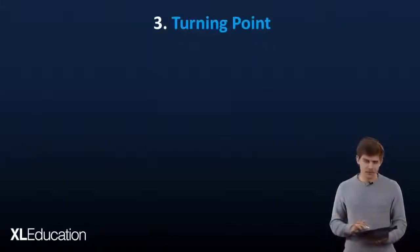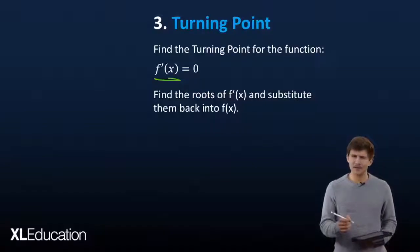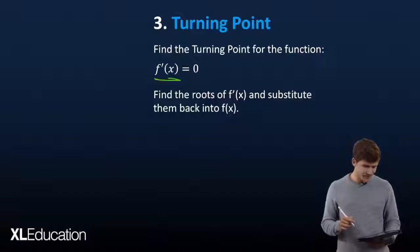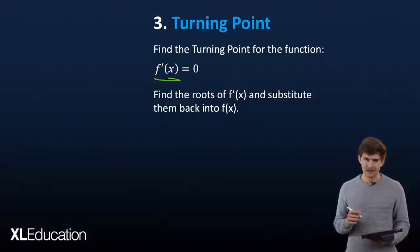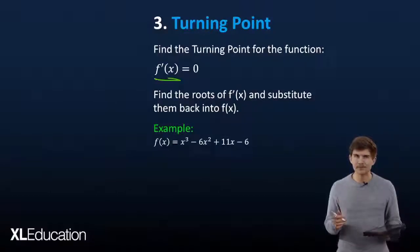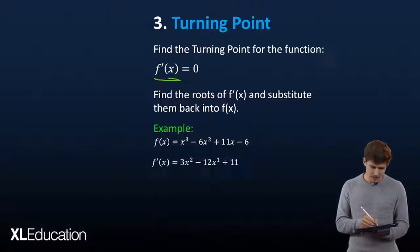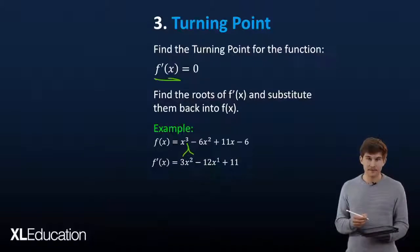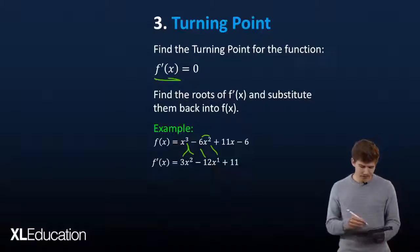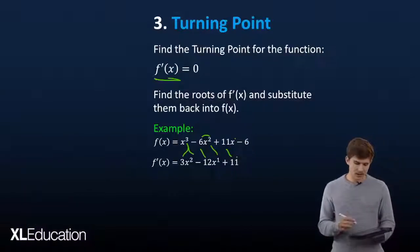The next thing on our shopping list is the turning point. The turning point is defined as the point where our gradient — our first derivative — equals zero. Using the power rule on our example: bring the three down and minus one for the cubic term, bring the two across for the next term, and the 11 stays as 11. That gives us our first derivative.